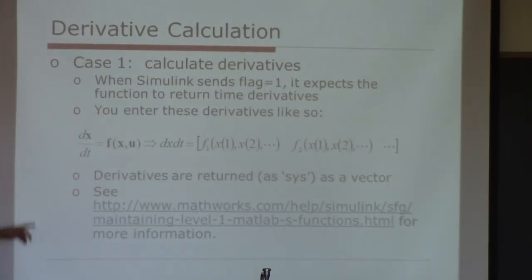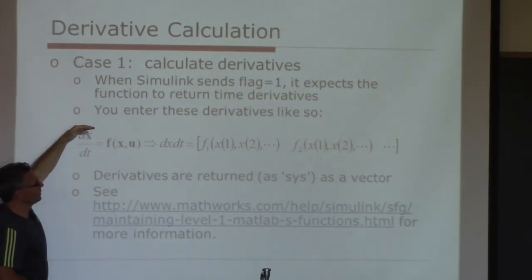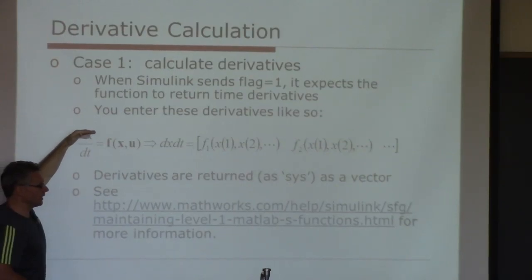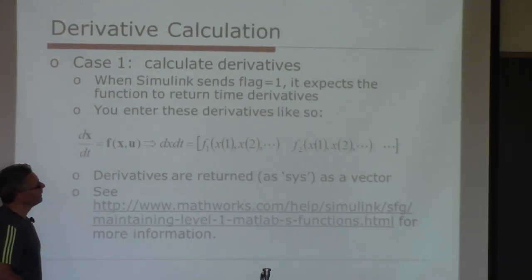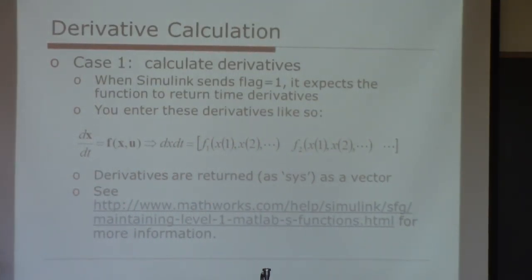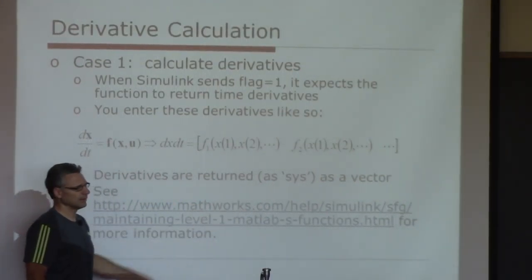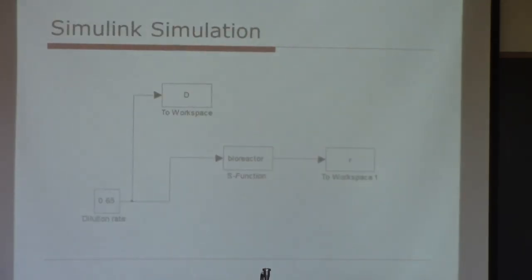Case 1: Simulink sends flag 1 to your S-function, meaning it wants you to evaluate the right-hand side of the differential equations. So if you have a set of differential equations in vector form — for this problem you have three, one for x1, x2, and x3 — you have to evaluate the right-hand side of each equation, just like an M file, and return those derivatives as a vector sys.